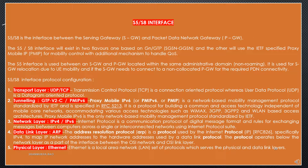The S5-S8 interface is between the Serving Gateway and the Packet Data Network Gateway. The S5-S8 interface exists in two flavors: one based on GN-GTP (SGSN to GGSN), and the other uses the IETF-specified Proxy Mobile IP for mobility control with additional mechanisms to handle quality of service. The S5 interface is used between the Serving Gateway and the Packet Data Network Gateway located within the same administrative domain. It is used for SGW relocation due to user equipment mobility and if the SGW needs to connect to a non-collocated PGW for the required PDN connectivity.